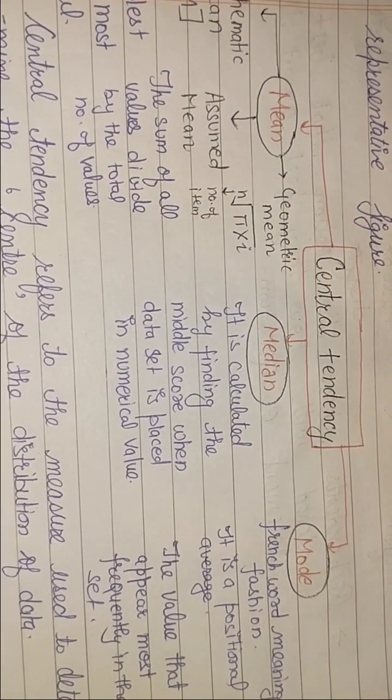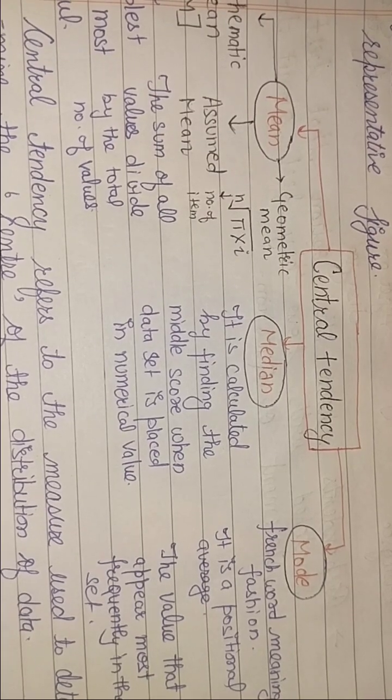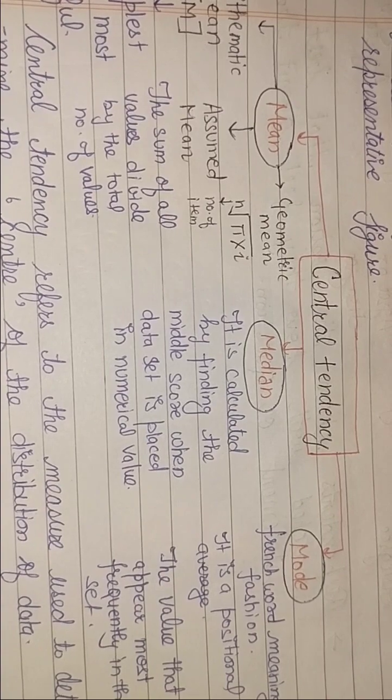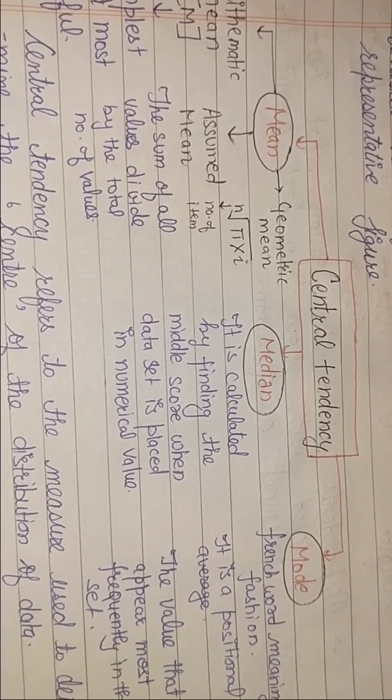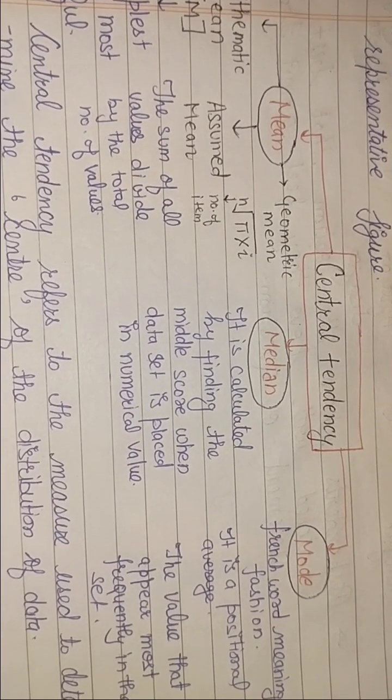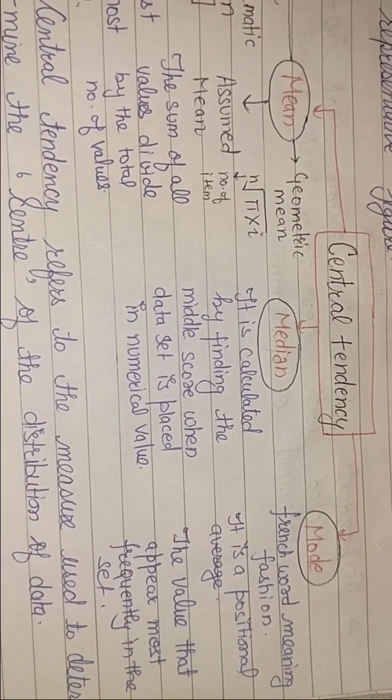Then median ki baat karun - it is calculated by finding the middle score when data set is placed in numerical value. Ki mere paas koi bhi numerical ki value di hai, maan lijiye mere paas seven values di hai, toh three ek side jayengi, three dusri side, and center ki jo value mere paas bache gi, usse main bol dungi median.